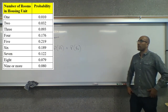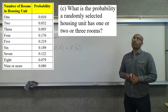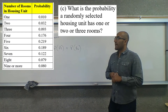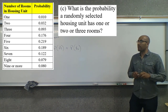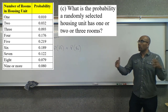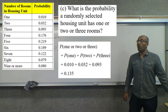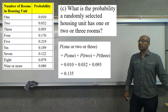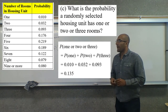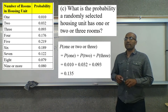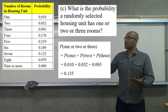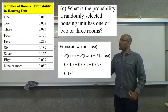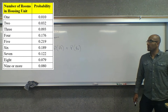We can extend this: what is the probability that a randomly selected house has one or two or three rooms? Again, a house can't have a total of one room and also a total of three rooms — they're mutually exclusive. So the probability of one or two or three equals the probability of one plus the probability of two plus the probability of three. Adding those together, we get 0.135, or 13.5 percent of all homes in the United States have one, two, or three rooms.